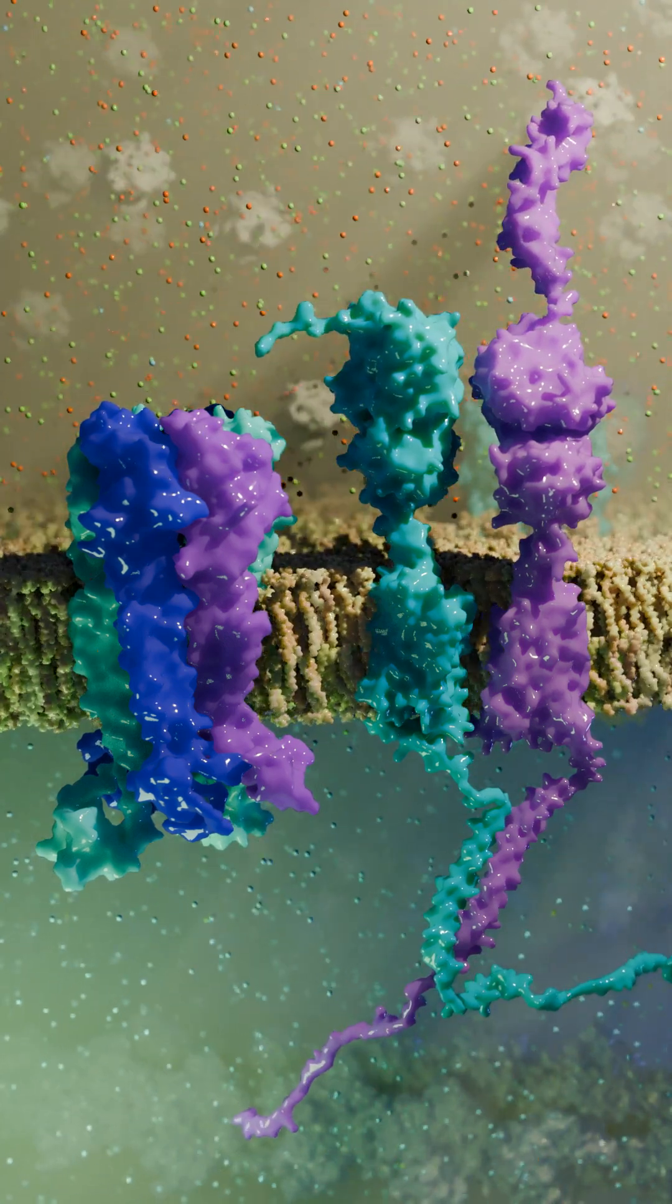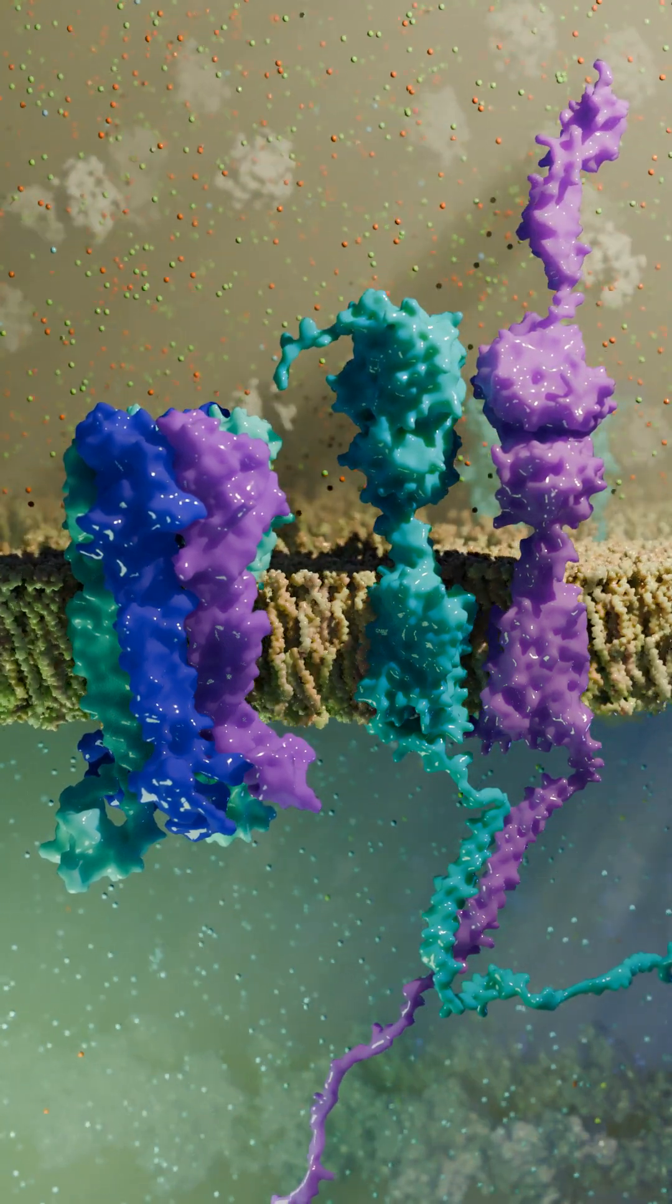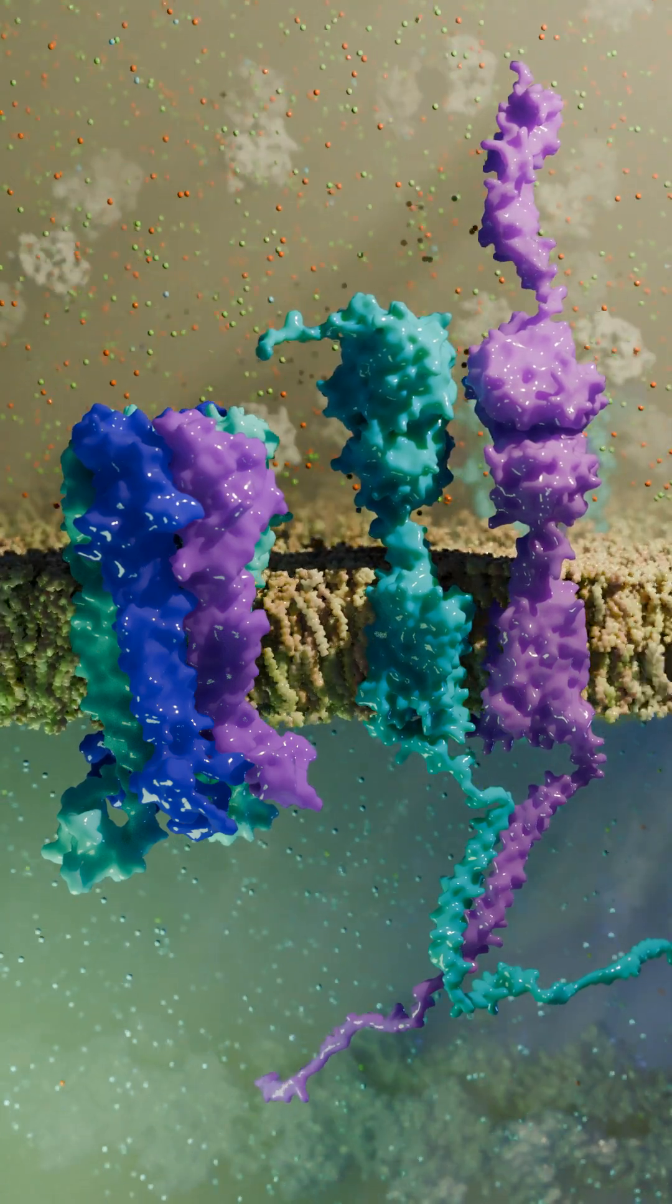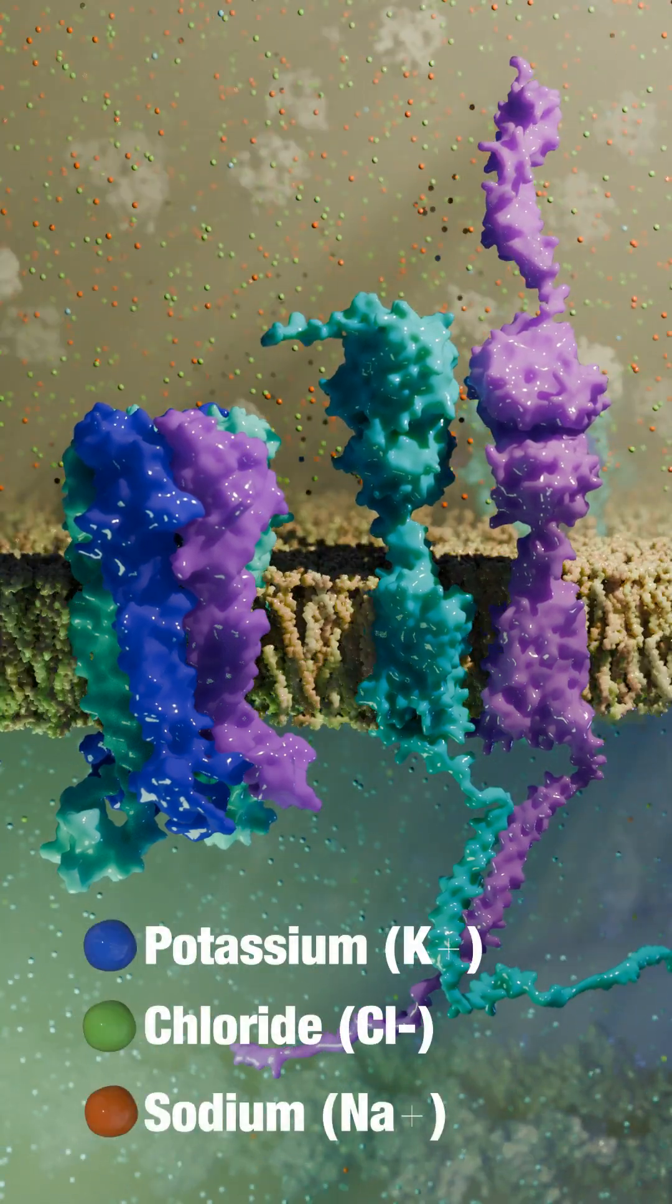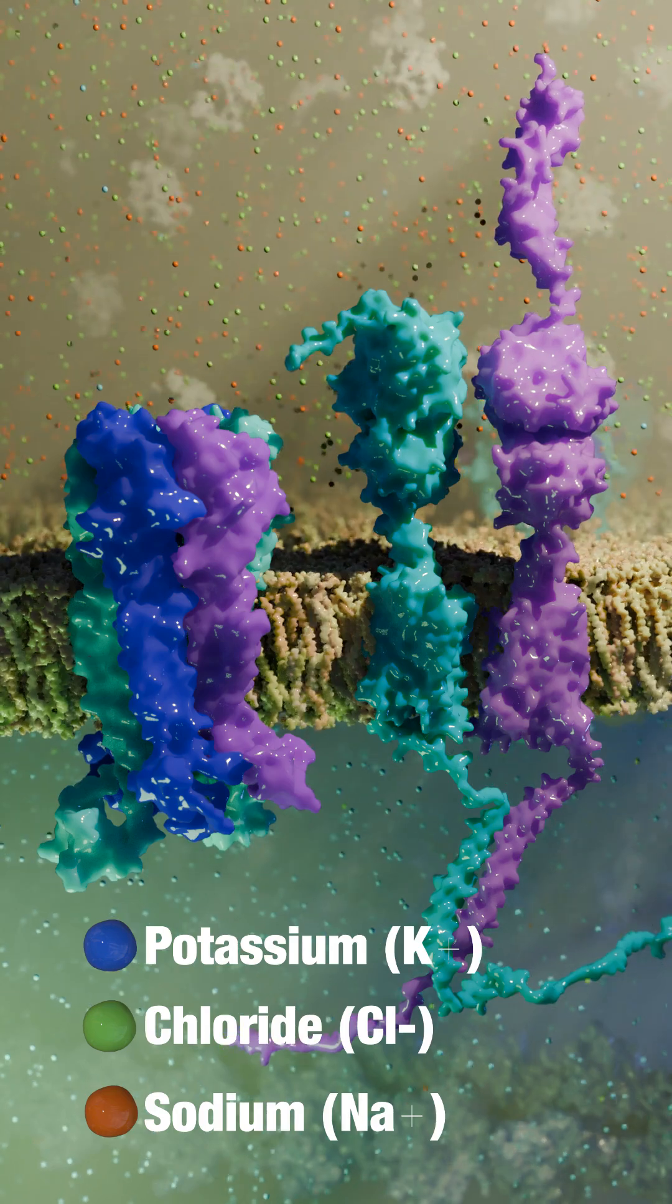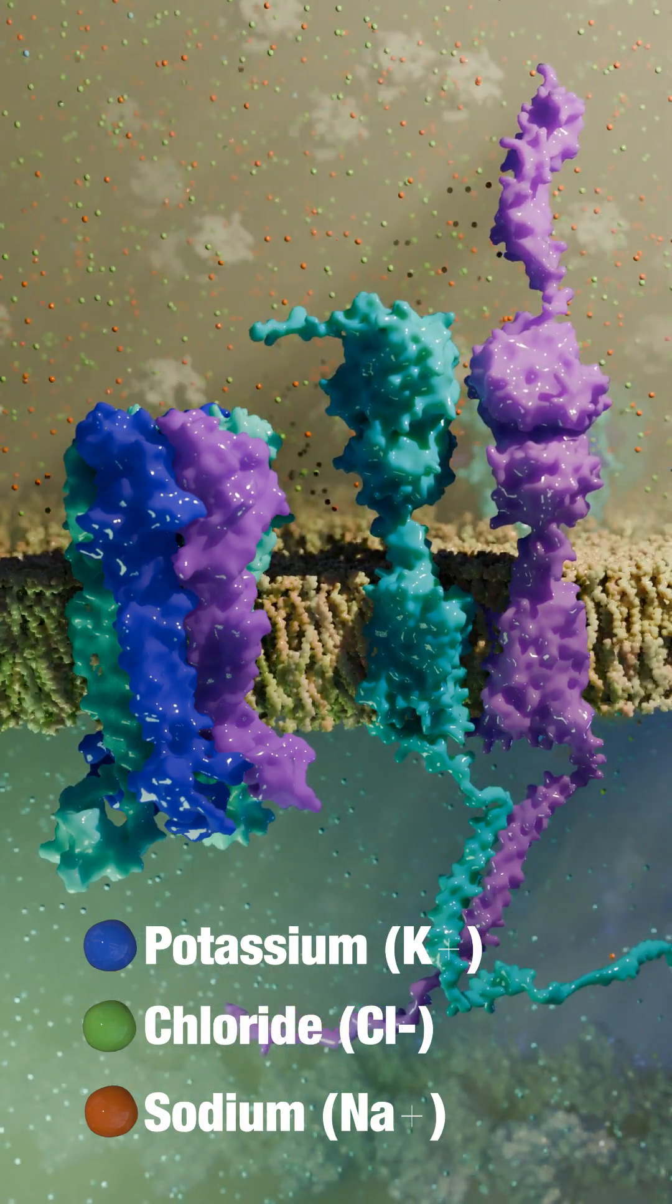This animation focuses on the GABA-B receptor located in a synapse of a postsynaptic neuron. However, GABA-B receptors can also be found in other locations where they perform different functions.